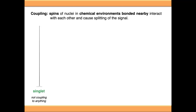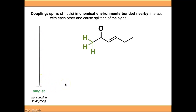If we look at a signal which is not split and not coupling to anything, we refer to that as a singlet, and it appears as a single peak in our proton NMR spectrum. As an example, these protons in green are not close enough to any other chemical environments to cause any splitting of the signal, so these protons would appear as a singlet.